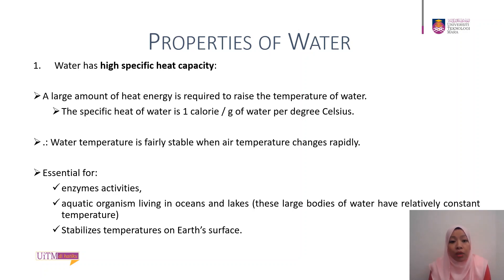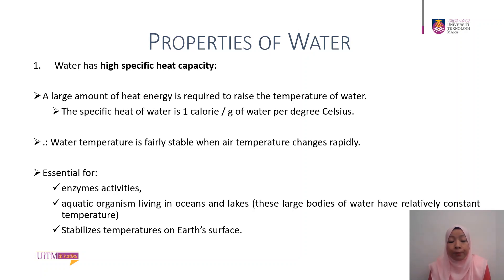Water is also essential for enzyme activities. Our body temperature of 37 degrees Celsius is the optimum temperature for enzymatic activities, which explains why our body is mainly composed of water. Aquatic organisms living in oceans and lakes benefit from the large bodies of water having relatively constant temperature, so fish and animals in the ocean are still able to survive even as seasons change, since the ocean does not freeze during winter.